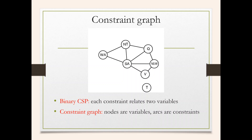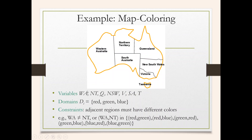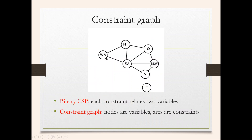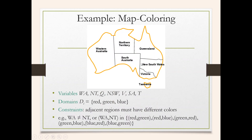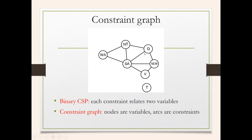If it is a binary CSP, each constraint relates to two variables. In the constraint graph, the nodes are the variables and the arcs are the constraints. So the variables are represented by nodes, and the arcs represent the constraint that adjacent regions must have different colors — if two nodes are connected, their colors must be different. This is the graph representation format.